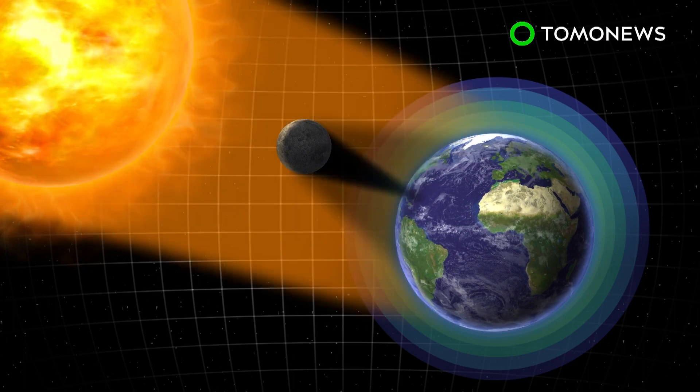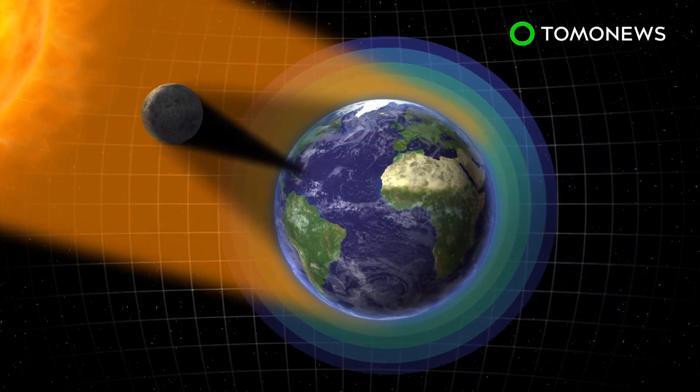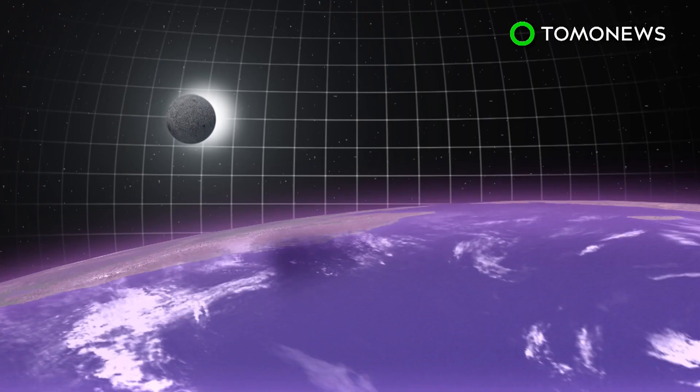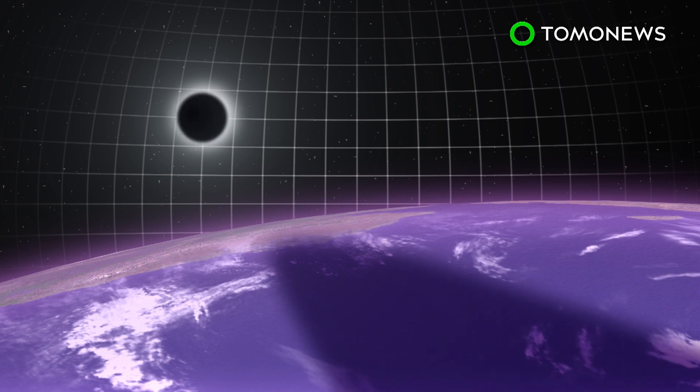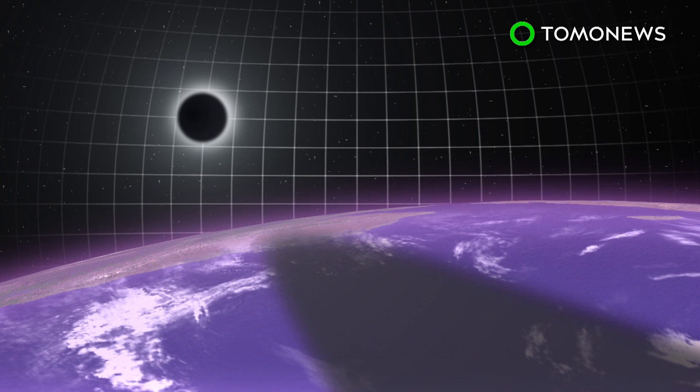When the eclipse takes place on August 21st, part of the Earth's atmosphere will be affected. The ionosphere is an area of the lower atmosphere that protects the planet's surface from ultraviolet radiation. This radiation electrifies atoms entering Earth from space.